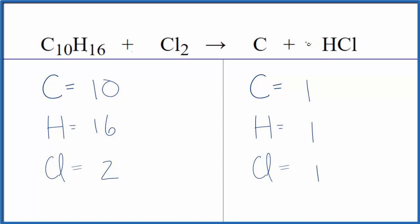If we put a coefficient of 16 in front of the HCl, 1 times 16, that equals 16. We've balanced the hydrogens and then 1 times 16, that'll give us 16 chlorine atoms.